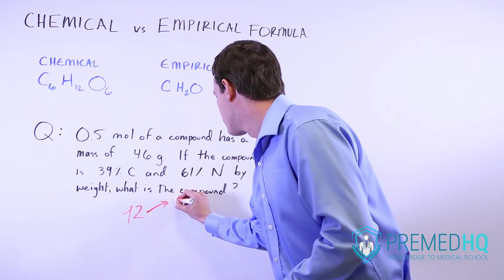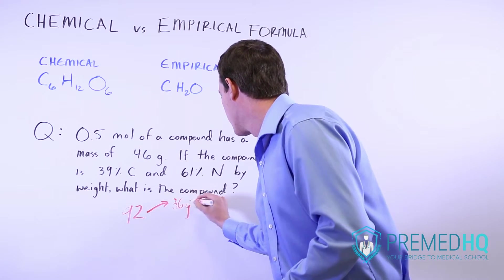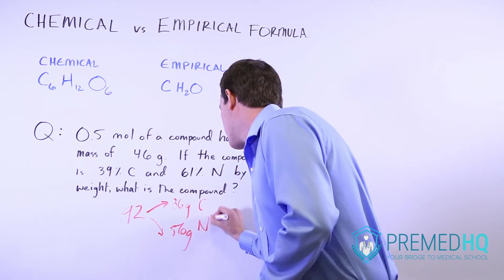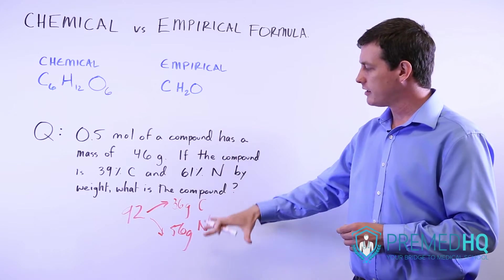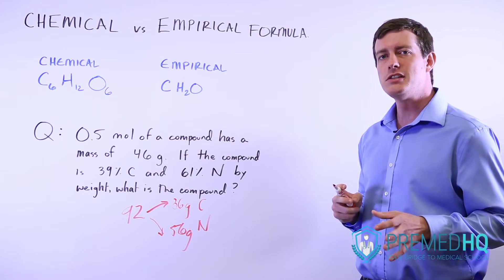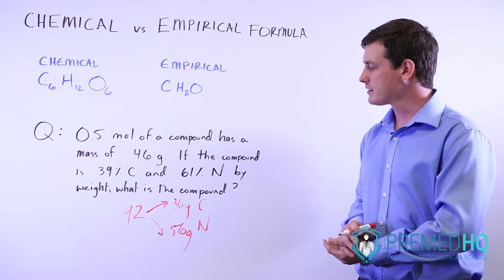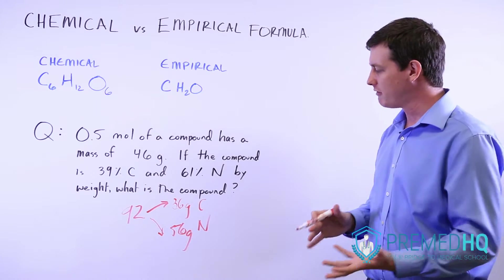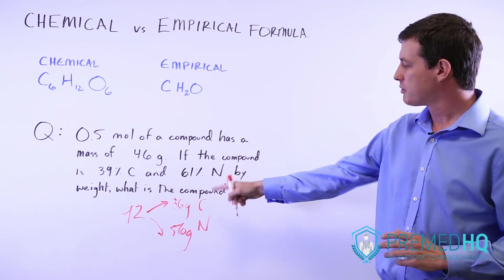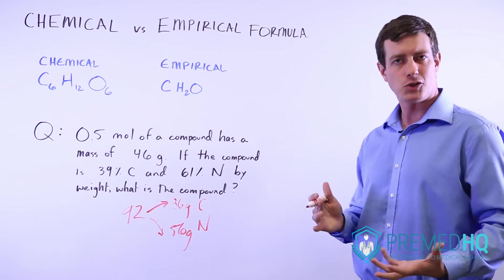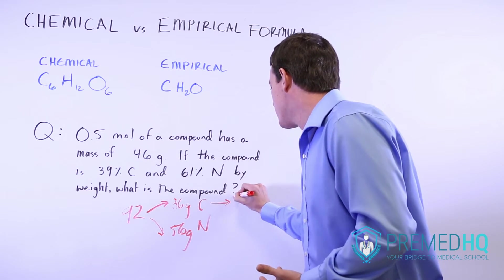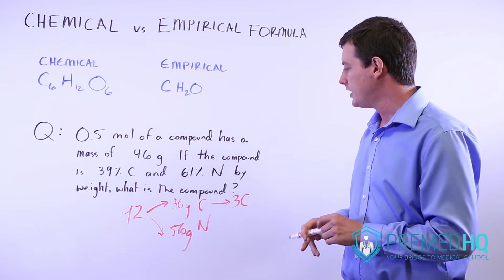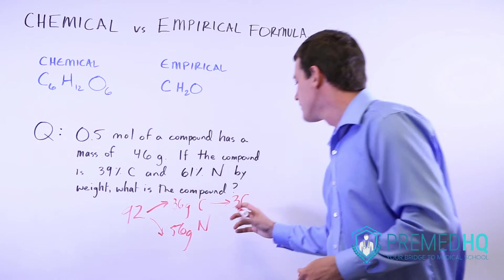Those are the numbers of grams we're working with. Now all we need to do is divide by the atomic mass of carbon and nitrogen to figure out the overall ratio. The 36 grams divided by 12 for carbon gives us 3 carbons. The 56 divided by 14 (the mass number for nitrogen) gives us 4 nitrogens.